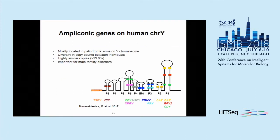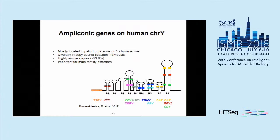For real data, we sequenced both IsoSeq reads and Illumina data from the human ampliconic Y gene families — nine gene families mostly located in palindromic arms on the Y chromosome. They have high diversity in copy counts between individuals, are characterized by very high sequence identity differing in only a couple of bases, and have been linked to various male fertility disorders.